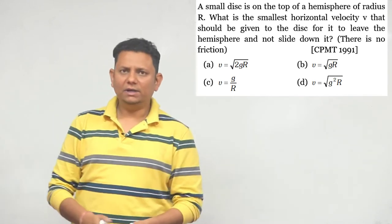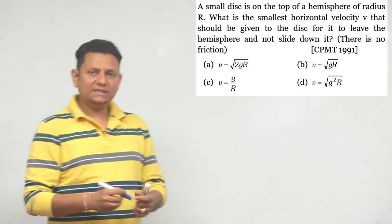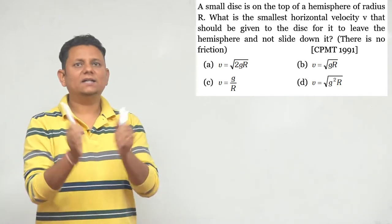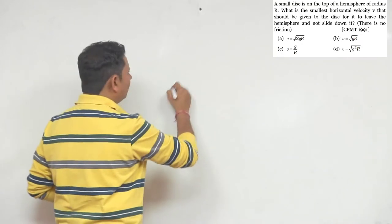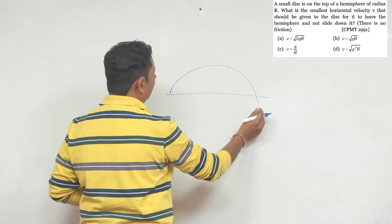It is given that there is no friction. This is an interesting question. Often students get confused by this question about what is happening. It's a very simple question. Let me explain. For example, this is your hemisphere bowl.